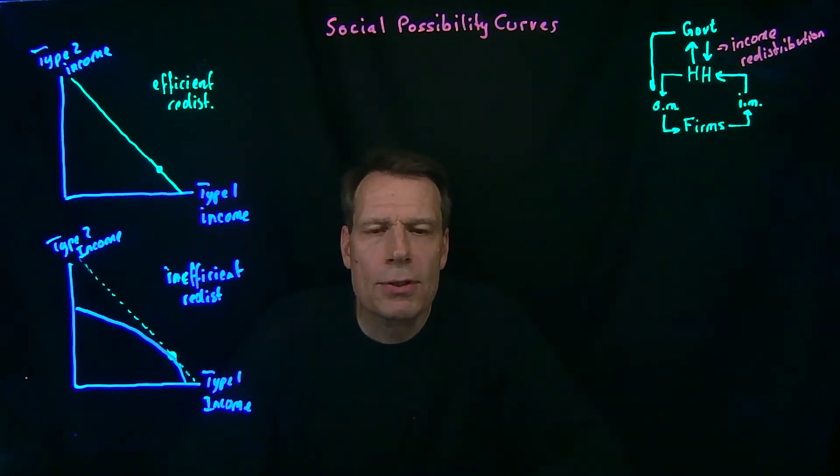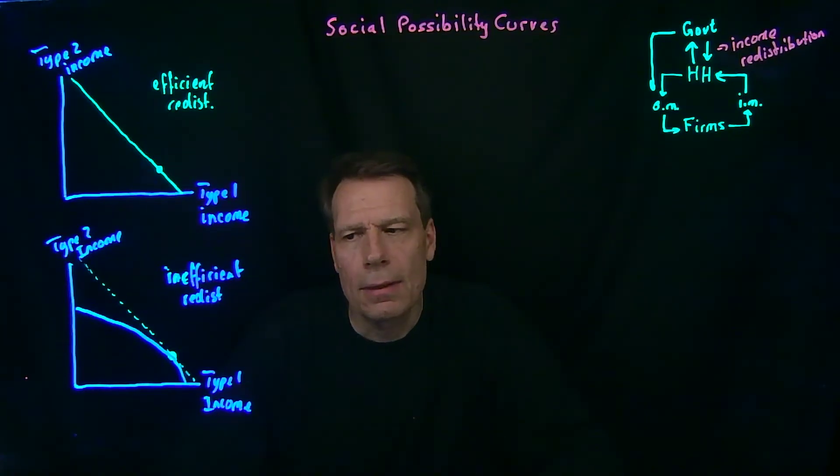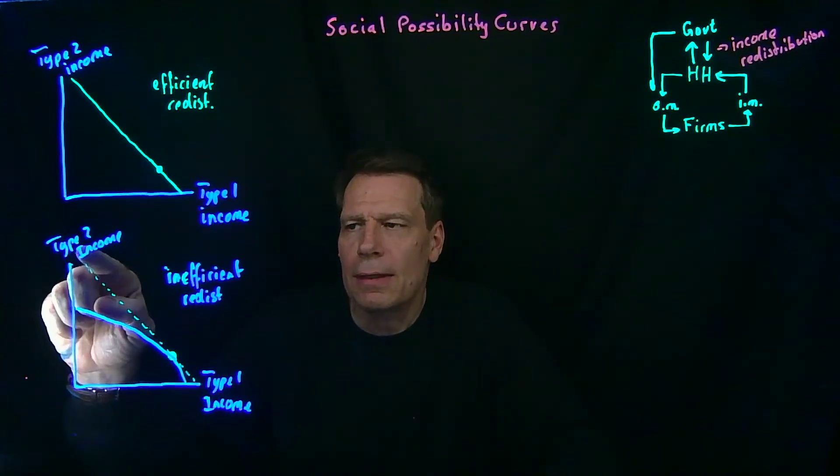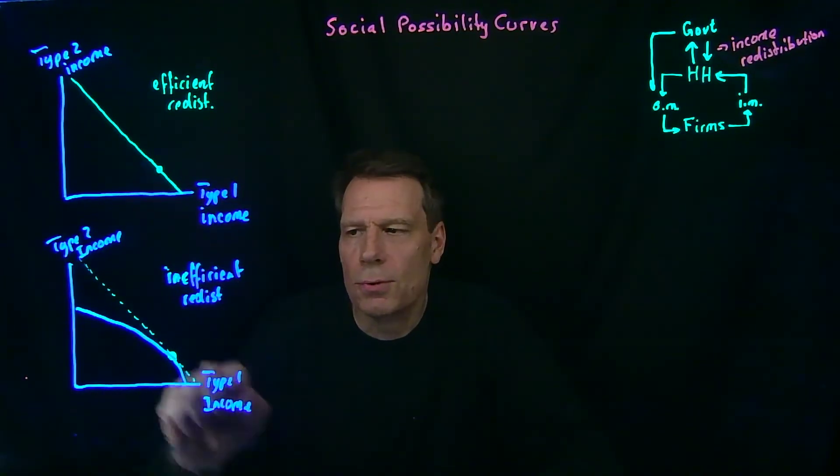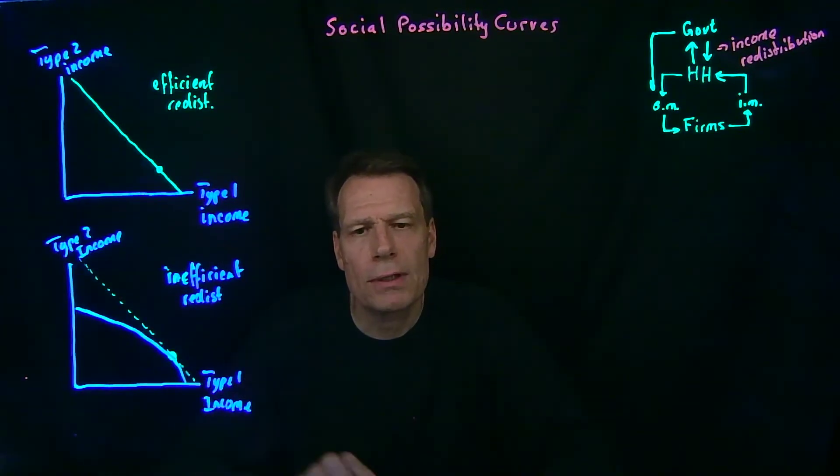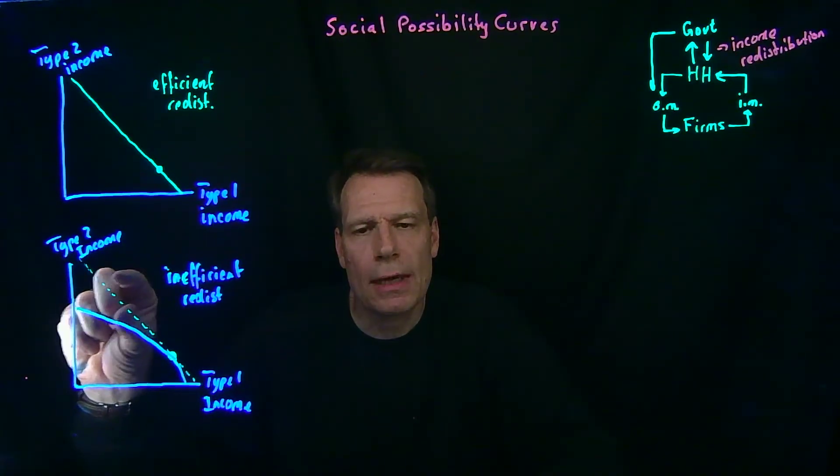And because deadweight losses increase geometrically as tax rates increase, the gap between the efficient redistribution line and the actual one using inefficient redistribution is going to grow the more redistribution we undertake. That gap is the measure of the deadweight loss.